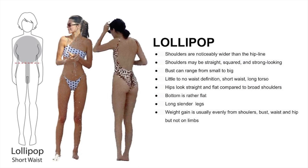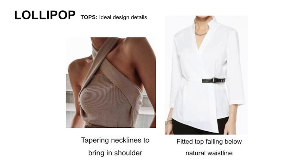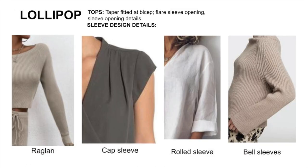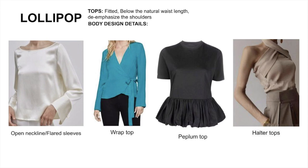Weight gain is usually even from the shoulders down to the hips, with very little weight gain through the limbs. For tops, the emphasis should be de-emphasizing the shoulders and lengthening the short waist. Here are some examples of necklines to narrow the shoulders — the sleeve should fit throughout the bicep with the focal point at the sleeve opening. Here are some examples of tops de-emphasizing the broad shoulders.